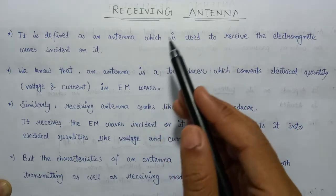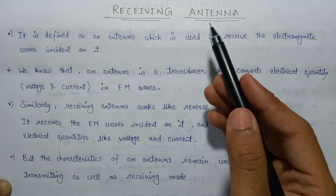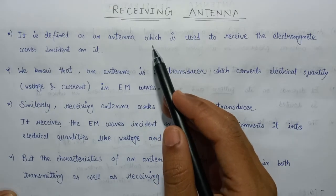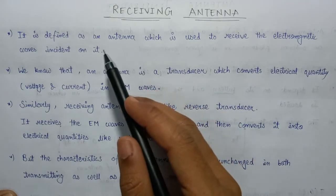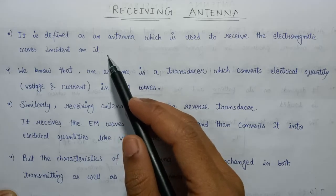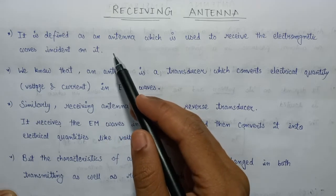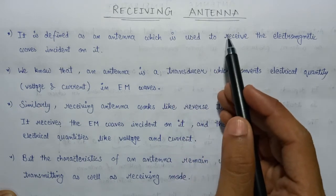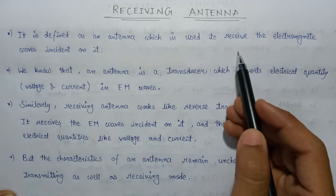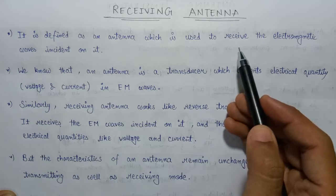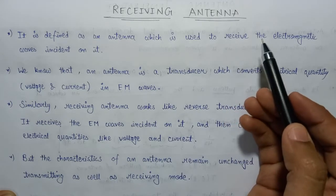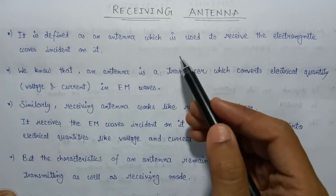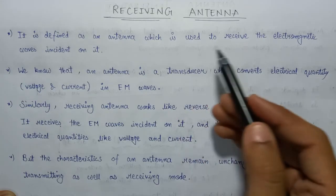In the general case, if we talk about the transmitting and the receiving antenna, then these both antennas are exactly the same. On one side, the transmitting antenna has the responsibility to transmit the electromagnetic wave from one part to another, and on the other side, the receiving antenna will receive that electromagnetic wave. So both have the same functionality but opposite actions.